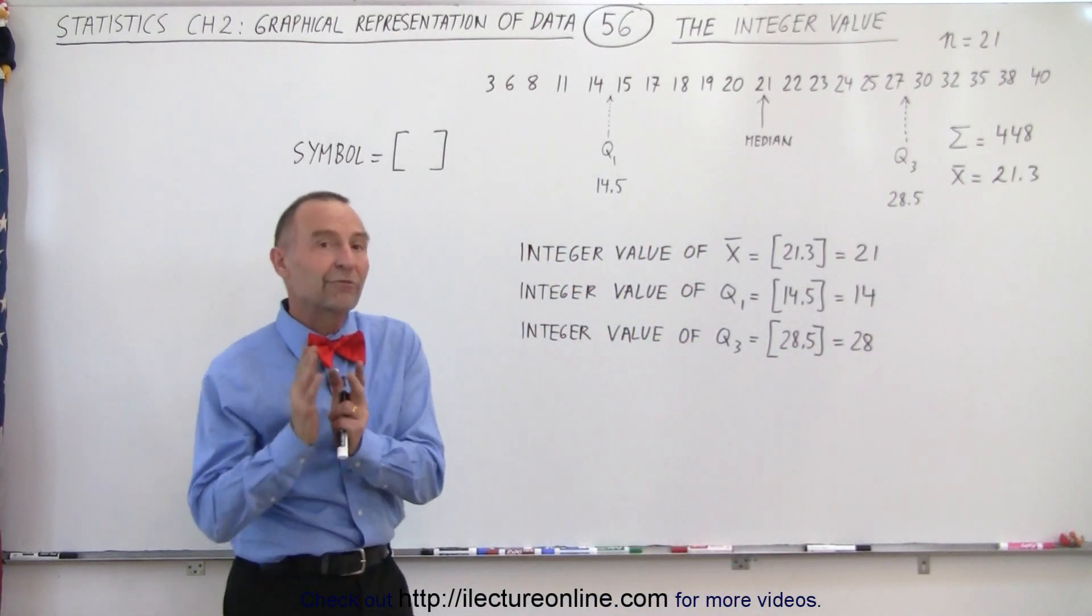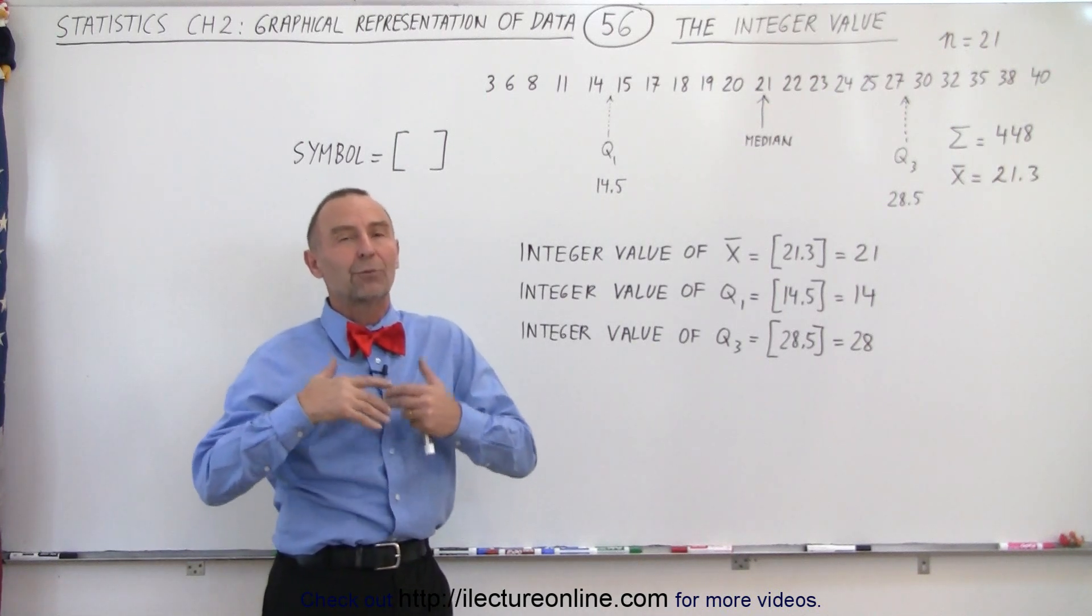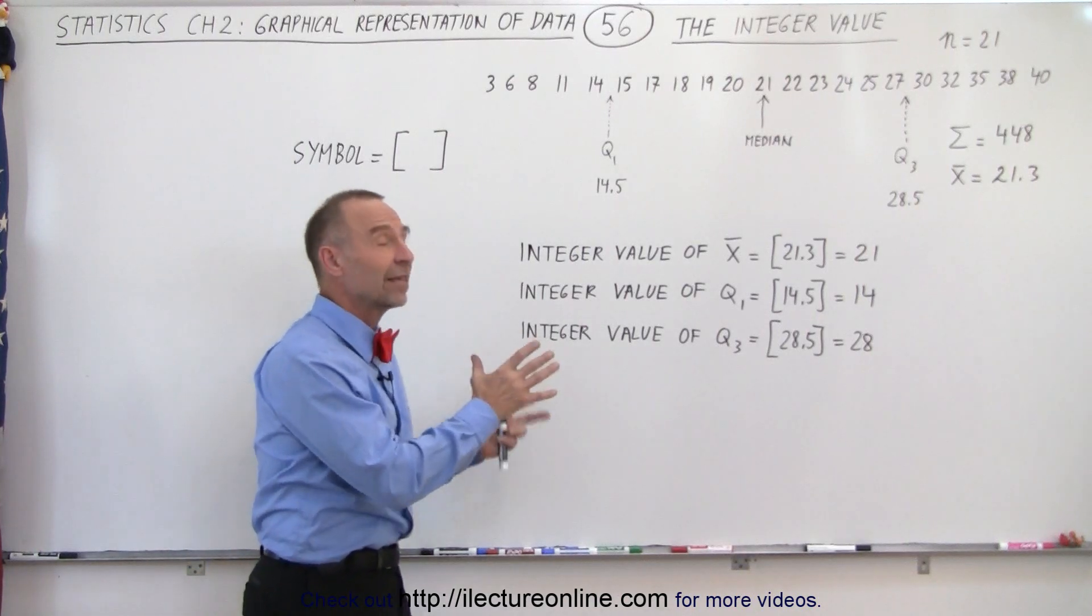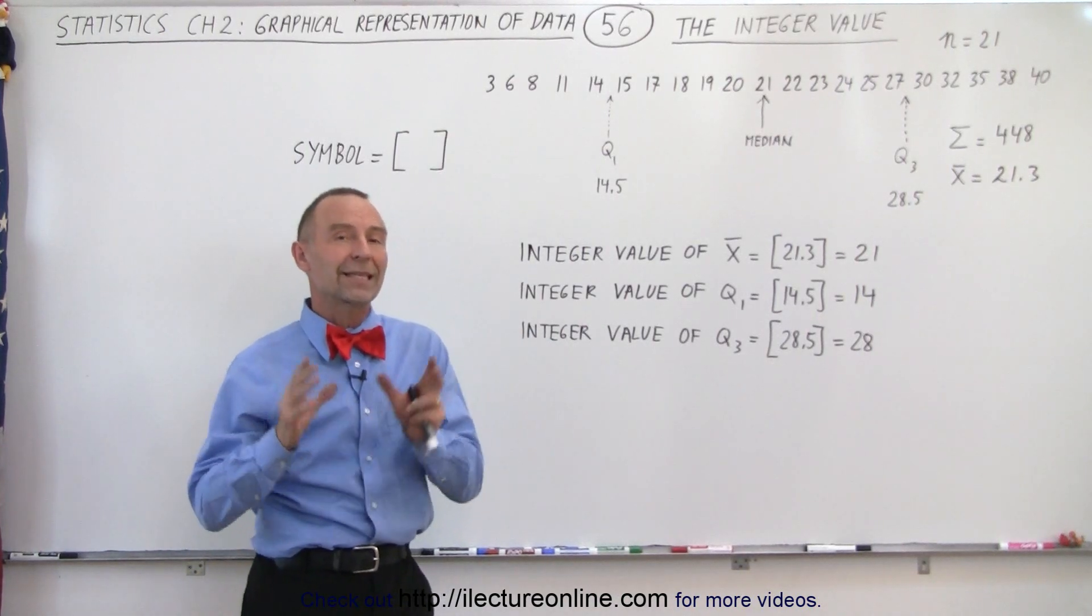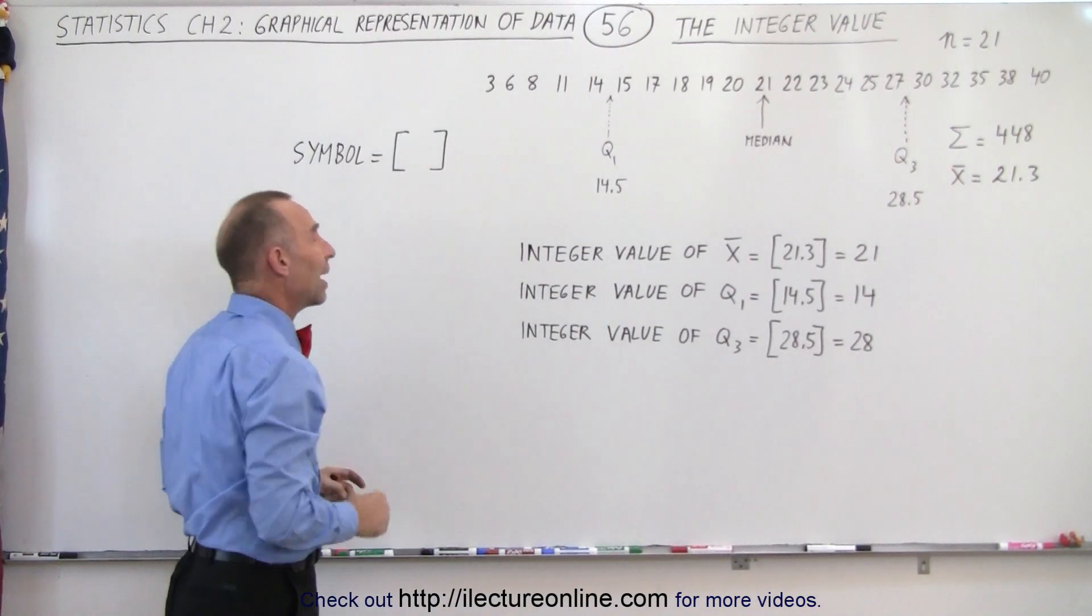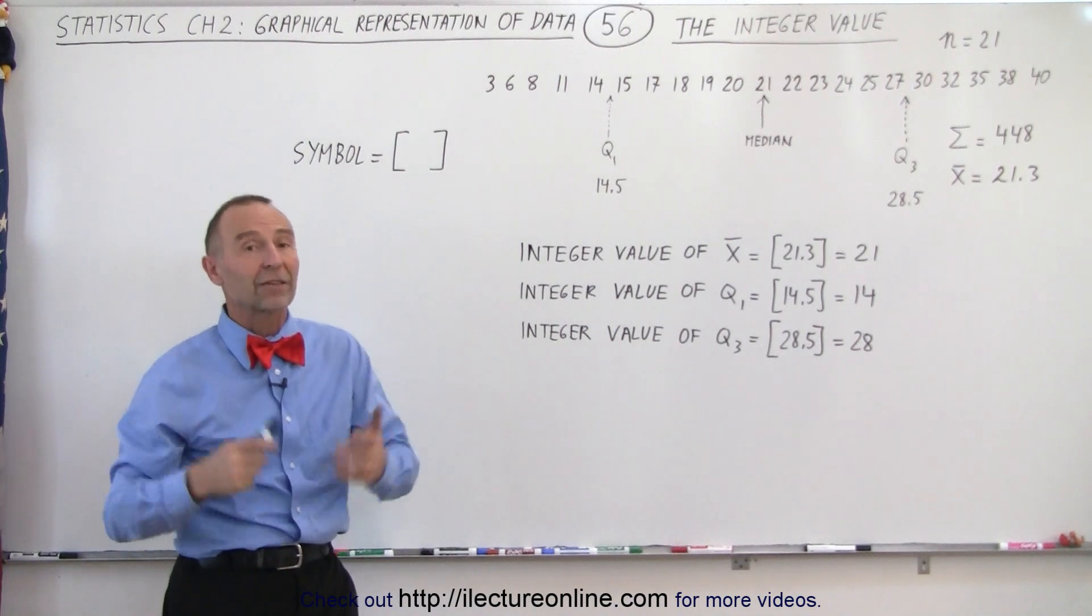There's so little difference between 14 and 14.5 and 28 and 28.5 that we really don't need to mention that 0.5. So simplifying things can be obtained by simply taking the integer value of these numbers. The symbol we use is the brackets, and that is what it looks like and it makes a lot of sense.